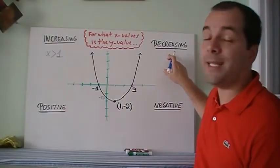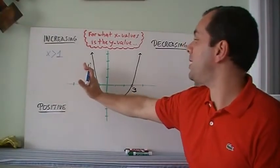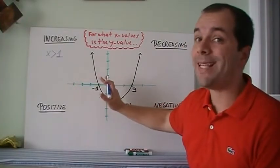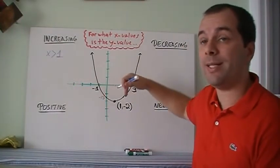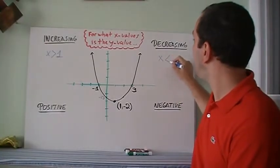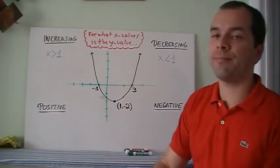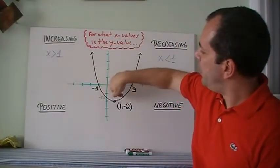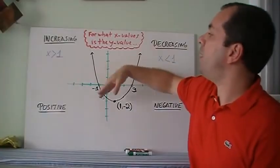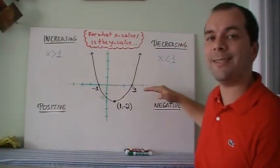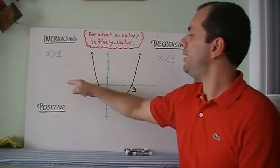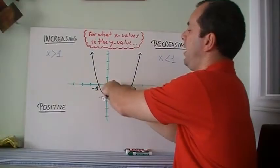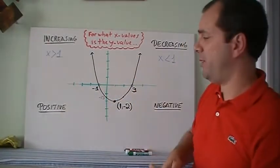And when is it decreasing? That's easy, because it was happening as we were coming along. So when x was less than 1, my function kept on going down. So my answer for this is x is less than 1. It's almost like it's a roller coaster — it's going down this way and then it's going up. Instead of talking about my y values, I'm saying when along the x axis. Before 1, it was always going down. After 1, it's always going up.